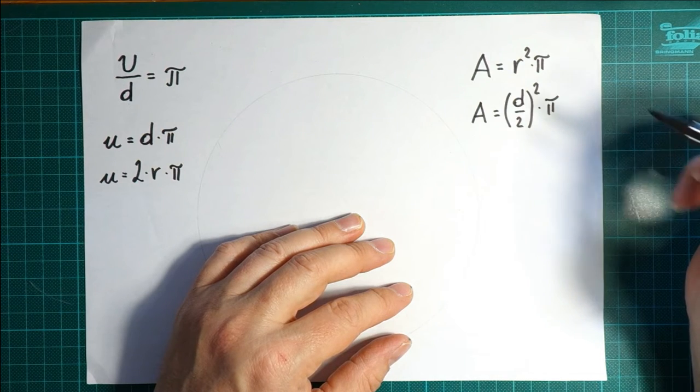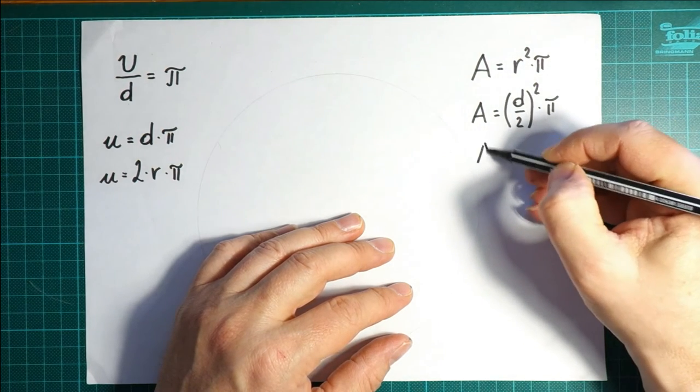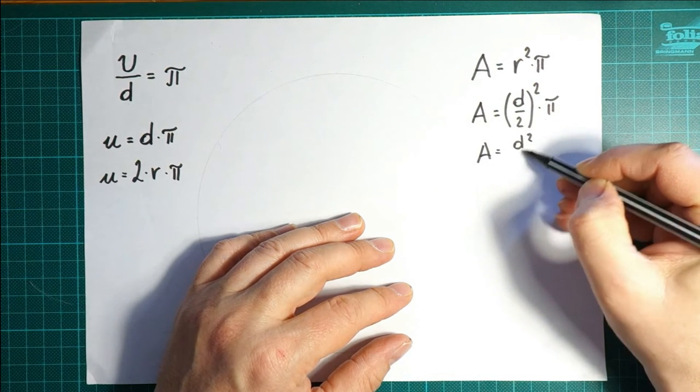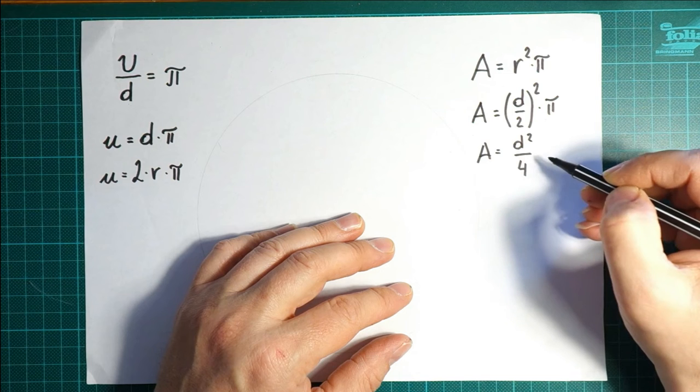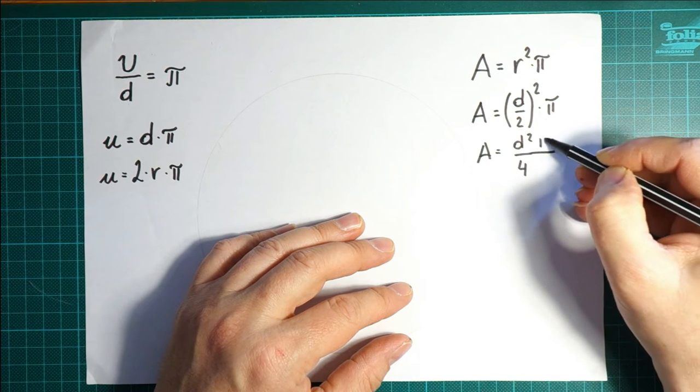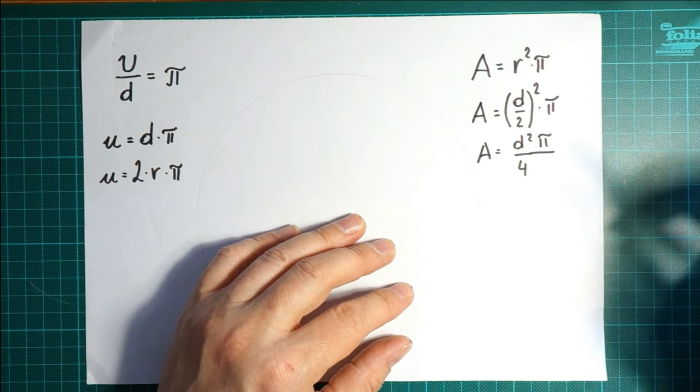We can also express this area as (d/2)² mal π. So in this case, the area is approximately (d/2)² mal π. I'll just write this down here in the description box.